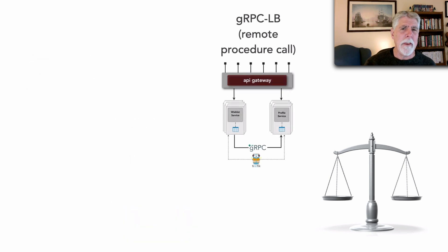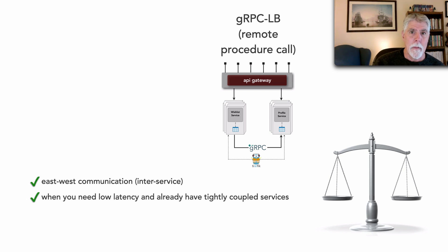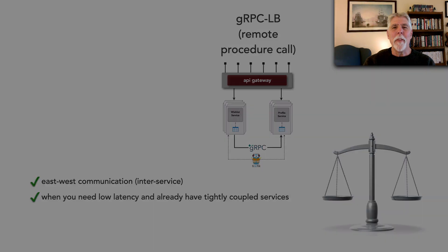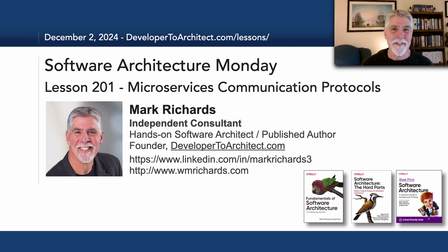For gRPC-LB, I also use this for East-West communication, but usually when I need low latency and when services are already tightly bound to each other in some sort of workflow — in that case the tight-binding trade-off becomes less significant. Those are the three options for communication protocols within microservices. This has been lesson 201 — stay tuned in two more Mondays for the next lesson in Software Architecture Monday.